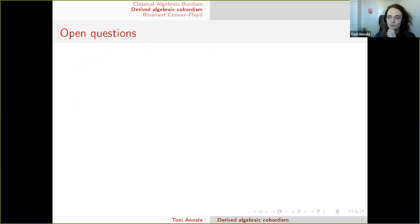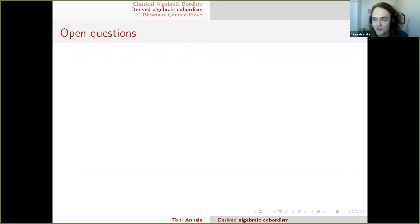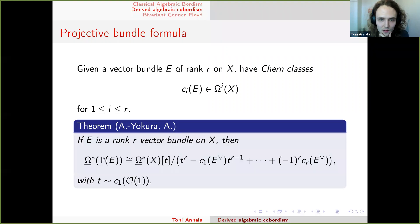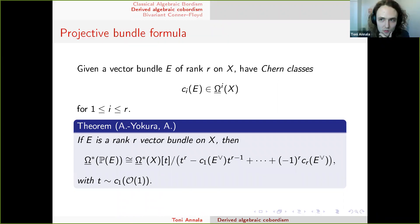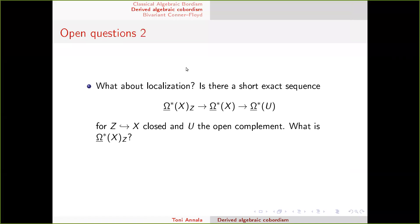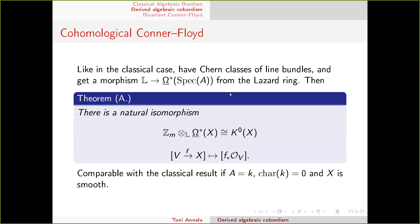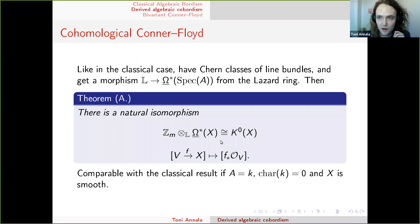There is also a projective bundle formula, following from work of me and Sachi Akura and later further work: you know the cohomology of the universal pre-cobordism ring of a projective bundle if you know the universal pre-cobordism ring of the base. Now I'll give some open questions. The first is somewhat embarrassing: I haven't computed the group structure of the universal pre-cobordism of a single example, so we don't know if the morphism from the Lazard ring is an isomorphism even for Spec of a field.